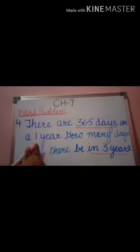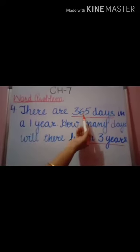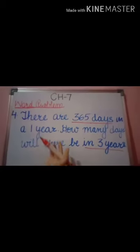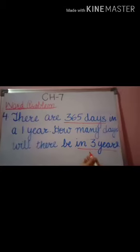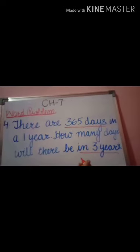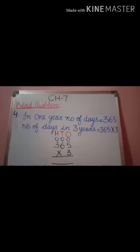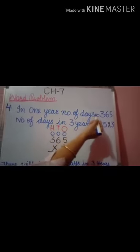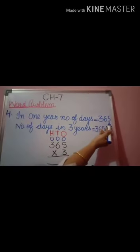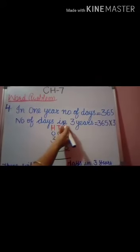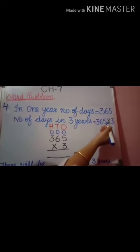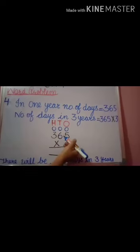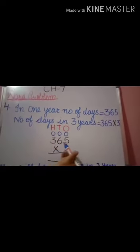In one year how many days? 365. So we have to find out how many days in three years, so we have to multiply by three. Firstly we have to write down: in one year, number of days is equal to 365. Number of days in three years is equal to 365 multiply by 3.